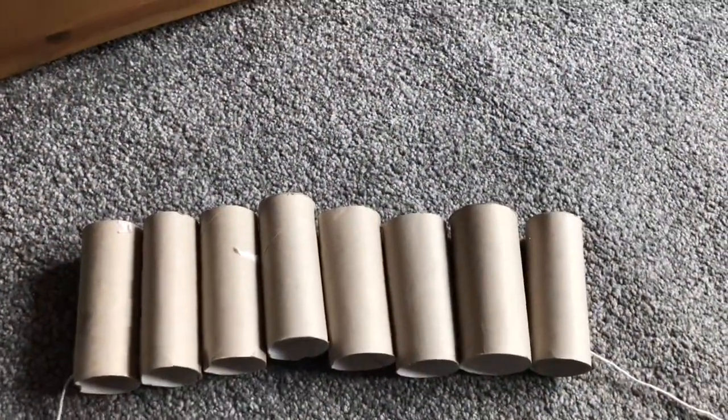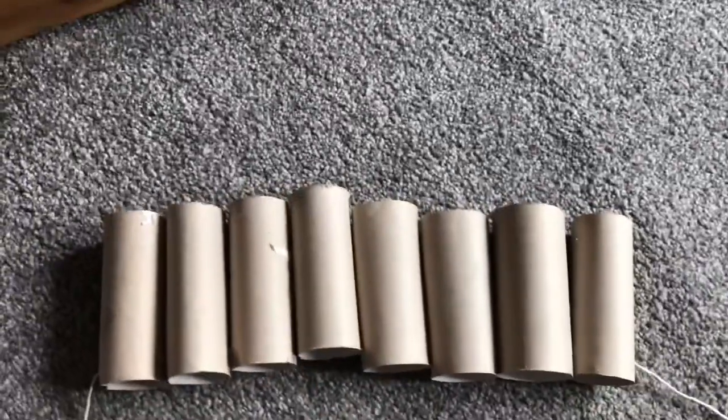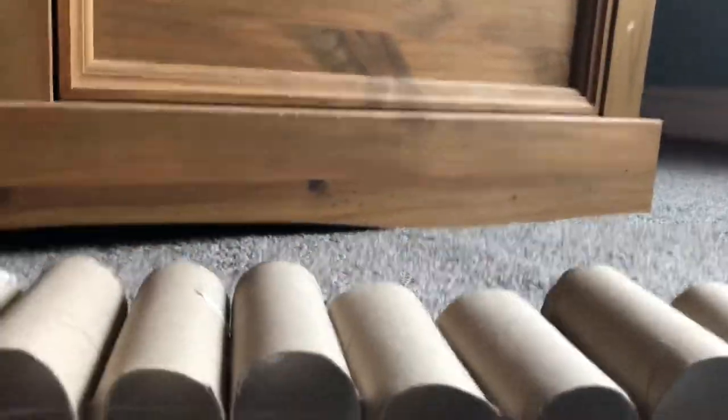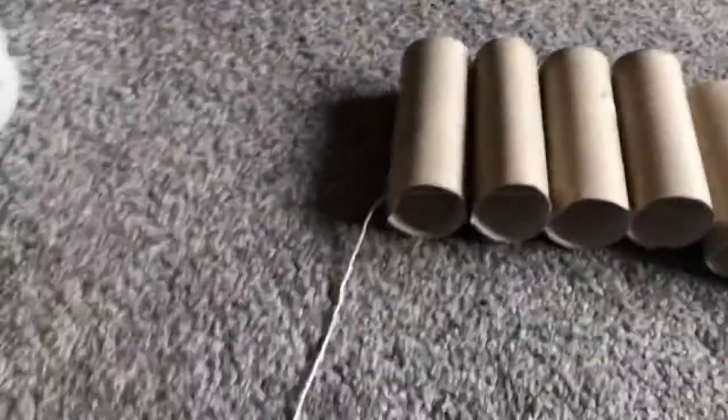As you can see, the rope bridge is starting to come together. There are a few that are a bit out of line, however I don't think this will matter too much, but this is why you need to get the holes in the right place. Otherwise you'll have them out of line. Now all you want to do is tie a knot on the end of each hole.